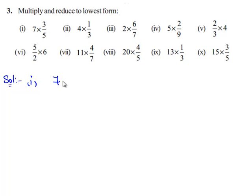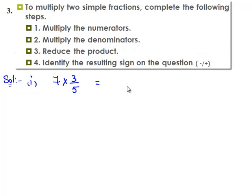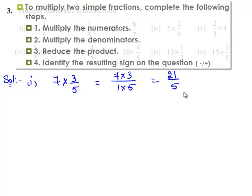We need to multiply 7 and 3 by 5. So 7 times 3 by 5 — to multiply, we multiply the numerators and also the denominators respectively. Therefore 7 times 3 divided by 1 times 5, which gives 21 divided by 5. Since 21 and 5 do not have a common factor, the lowest form is 21 divided by 5.